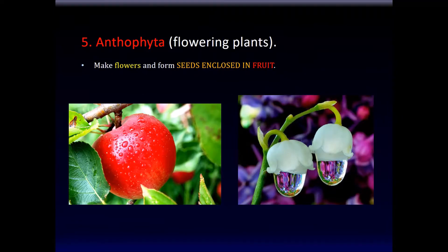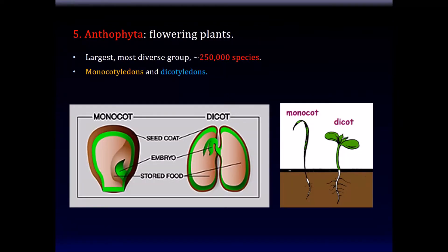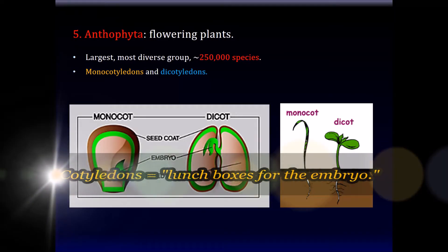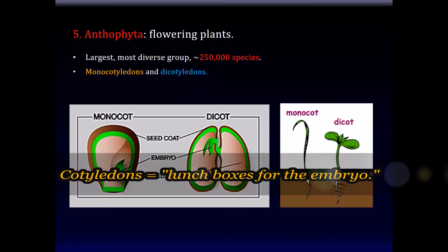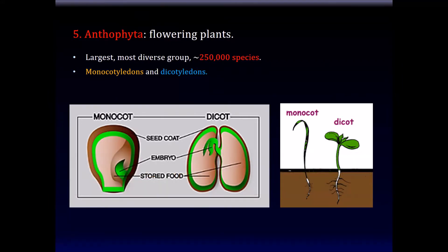The Anthophyta, or the flowering plants, make flowers and form seeds that are enclosed in fruit, as you see before you. This is the largest phylum — the largest group of plants. Apparently there are some 250,000 species of flowering plants. They can be broadly divided into monocotyledons and dicotyledons — that is, plants that produce seeds with one cotyledon, and plants that produce seeds with two cotyledons.